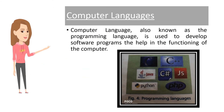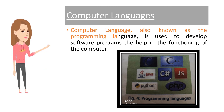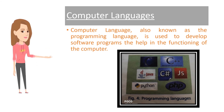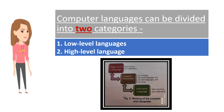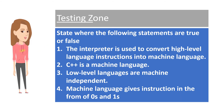Computer languages, also known as programming languages, are used to develop software programs that help in the functioning of the computer. Computer languages can be divided into two categories: 1. Low-level languages and 2. High-level languages.